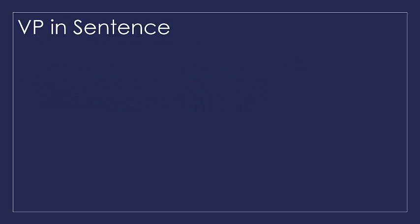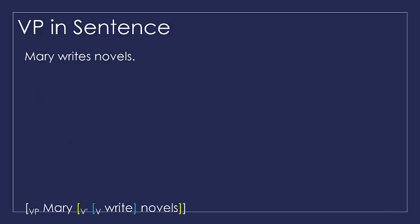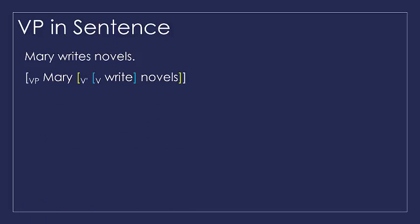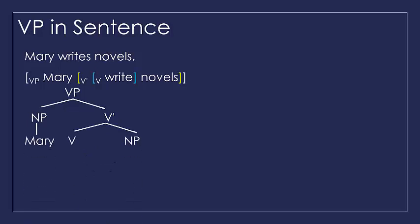Now we have a VP in a sentence. In a sentence like 'Mary write novels,' we have a VP. We can draw a diagram of this phrase. The VP branches into an NP and V-bar, and the V-bar branches into a V and NP. The NP subject — the specifier of V — is Mary. The head is 'write,' and 'novels' is the complement.